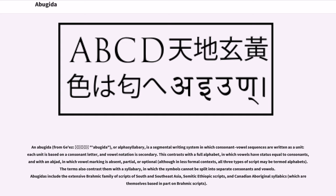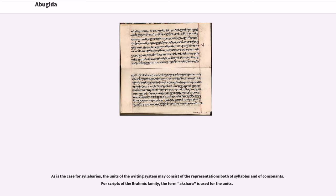The terms also contrast them with a syllabary, in which the symbols cannot be split into separate consonants and vowels. Abugidas include the extensive Brahmic family of scripts of South and Southeast Asia, Semitic-Ethiopic scripts, and Canadian Aboriginal syllabics, which are themselves based in part on Brahmic scripts. For scripts of the Brahmic family, the term Akshara is used for the units.